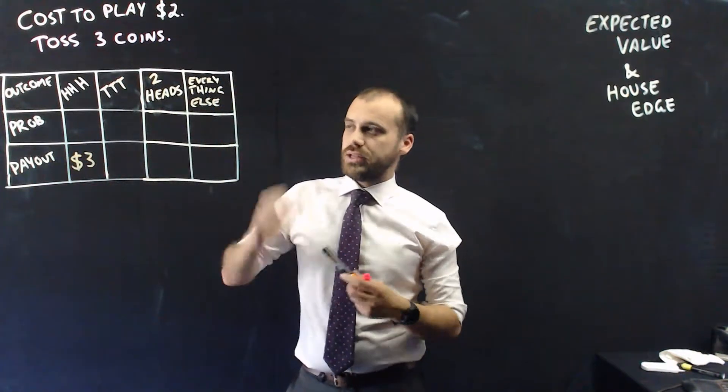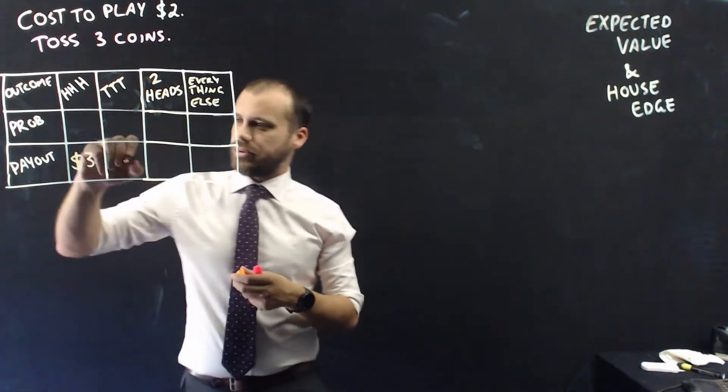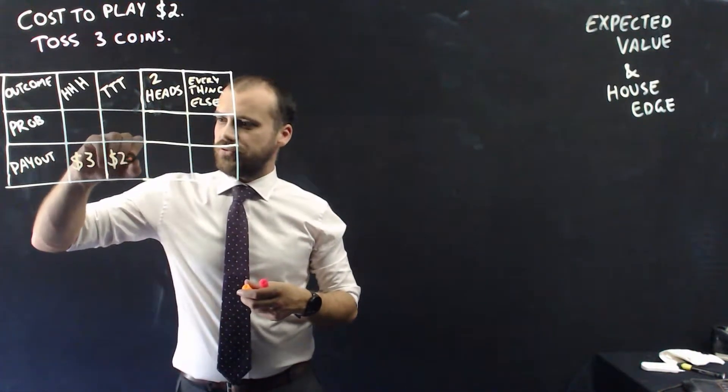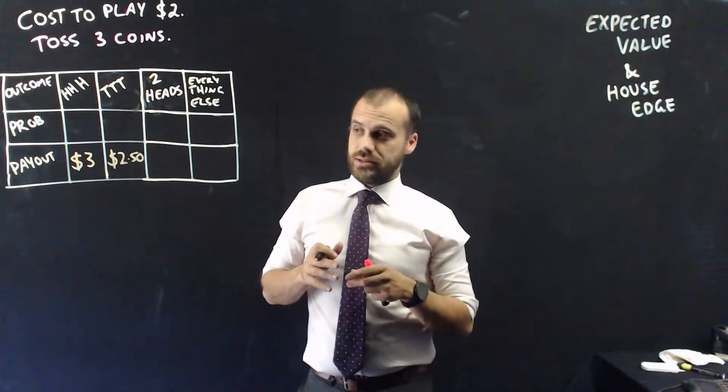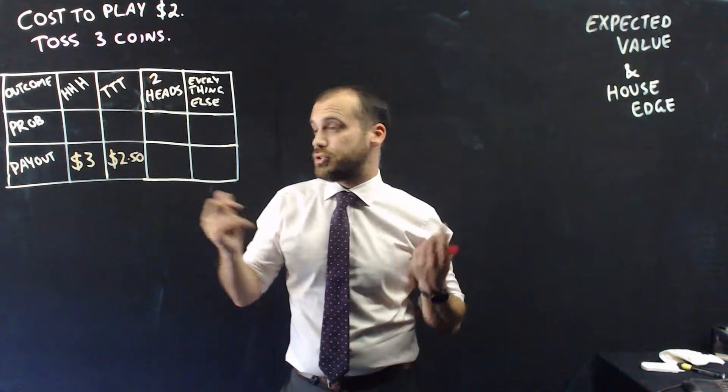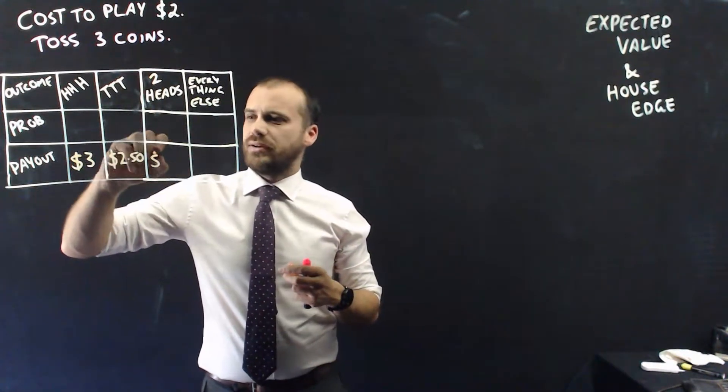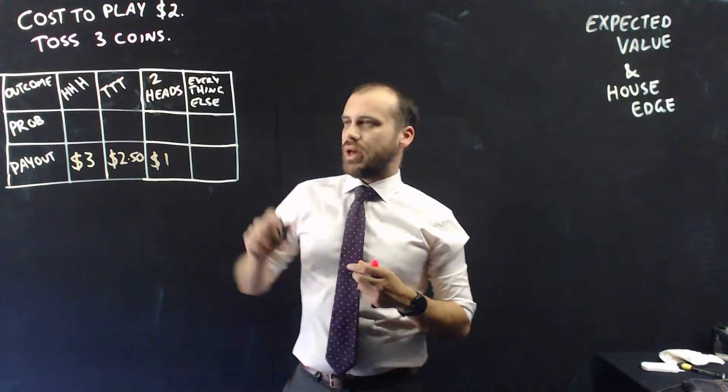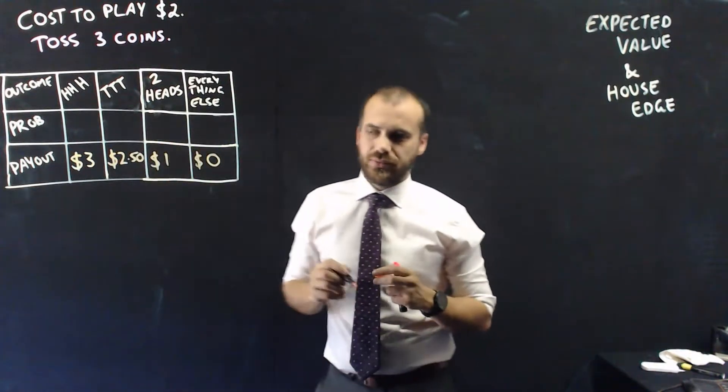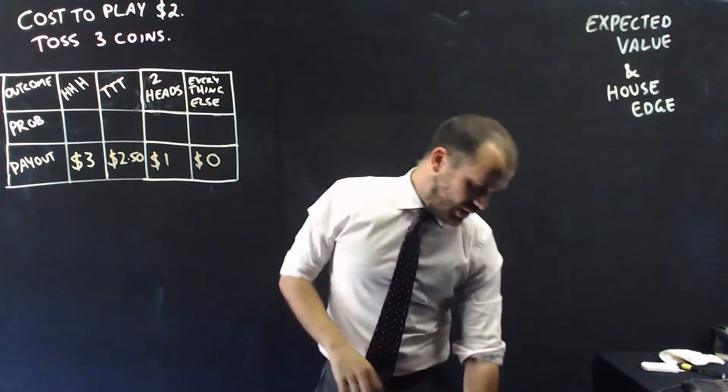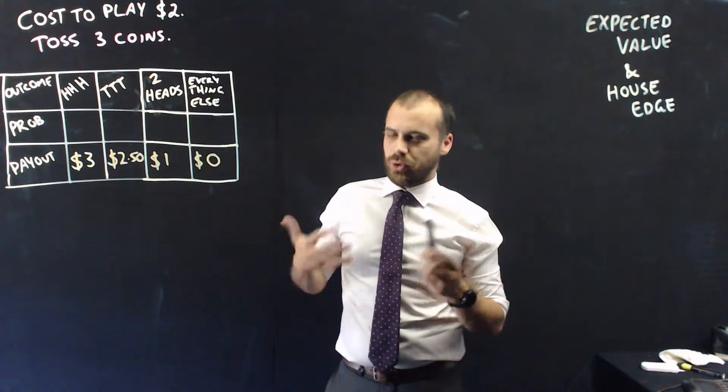If you get tails, tails, tails come down, tails aren't as good, but I am going to pay you $2.50. If you get two heads, I'll pay you $1. And everything else you lose, I'm going to pay you nothing.